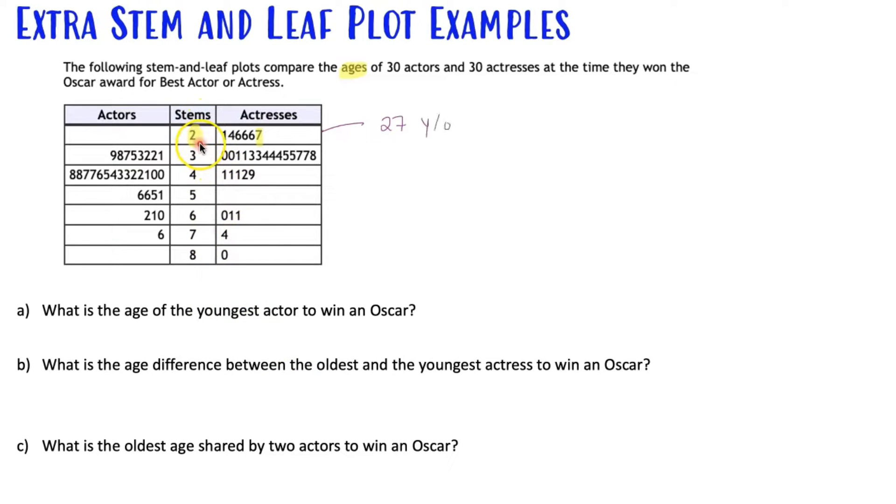OK, so this two and the seven wouldn't represent an actress that is 27 years old. You can see that these numbers here are going from least to greatest, starting from here at the stem and then out is going from least to greatest. Just like you see with the actresses from starting from the stem and then out is least to greatest.